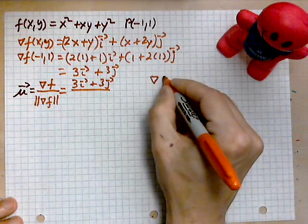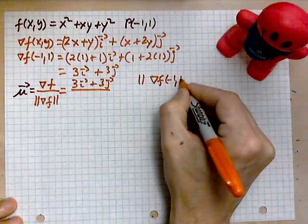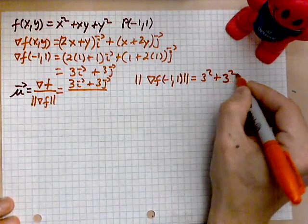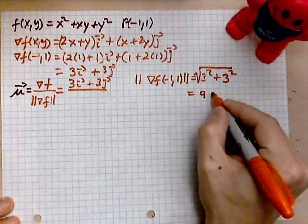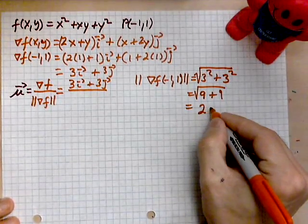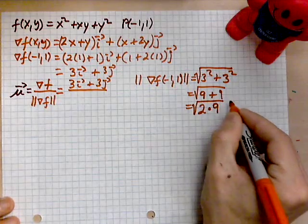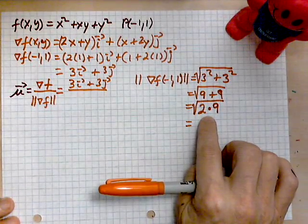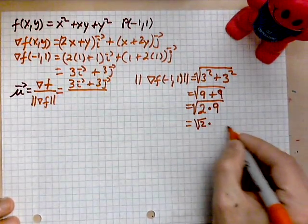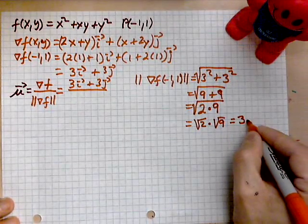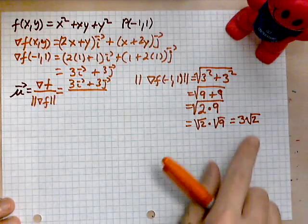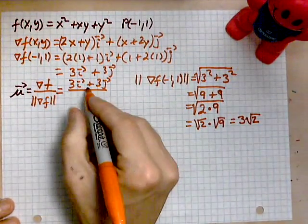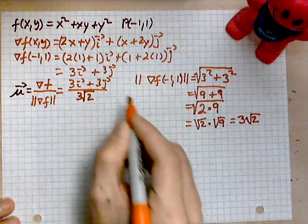To find the length we apply the Pythagorean theorem. The length of the gradient at the point is √(3² + 3²) = √(9 + 9) = √(2 × 9). Using the basic property of square roots, we can write this as √2 × √9 = 3√2. So 3√2 is the magnitude of the gradient.